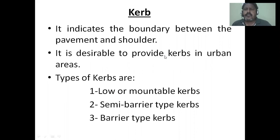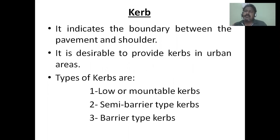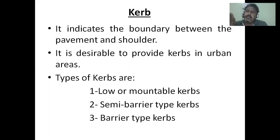It is desirable to provide kerb in urban areas. There are three types of kerb. First, low and mountable kerb — mountable means you can climb up above it. Second, semi-barrier type kerb — semi-barrier means you can stop partially. Third, barrier type kerb means you don't go above it. Semi-barrier type means you can climb up but it will be a bit difficult.